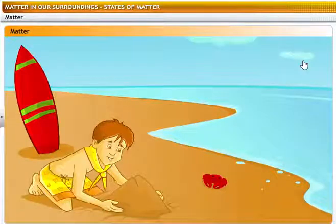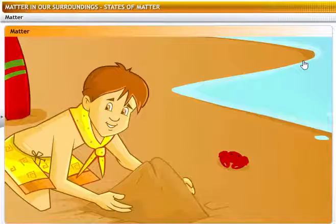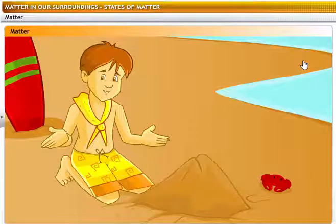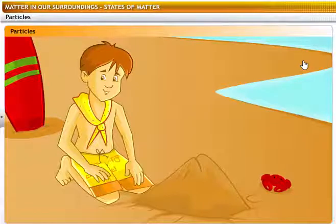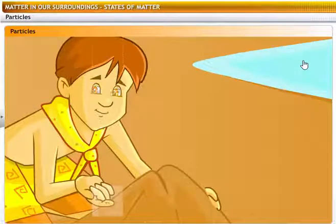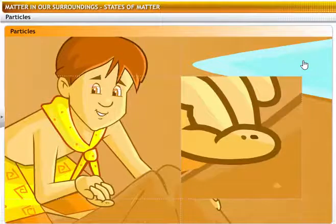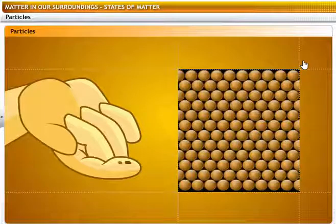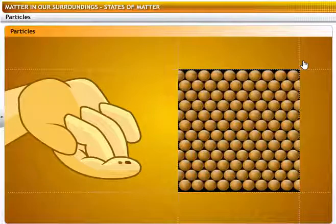Why does matter exist in the form of solids, liquids, and gases? What is matter? Matter is any substance that has mass and occupies space. All physical objects are composed of matter. Is matter made up of something? Yes, matter is made up of small particles. That grain of sand can be further broken into smaller particles which are not visible to the naked eye — those are the particles that explain why matter exists in the form of solids, liquids, and gases.